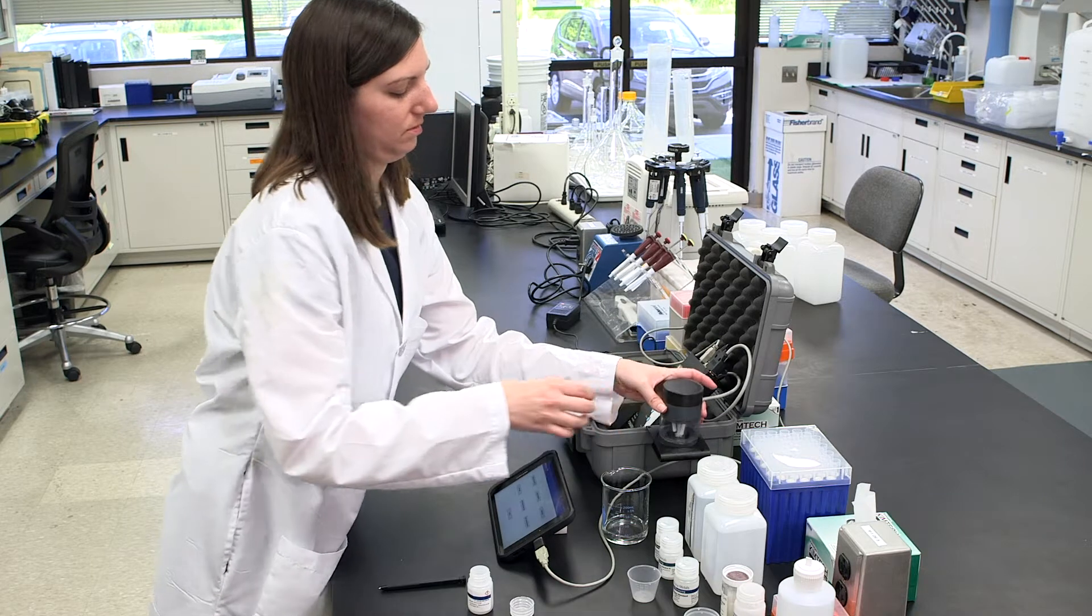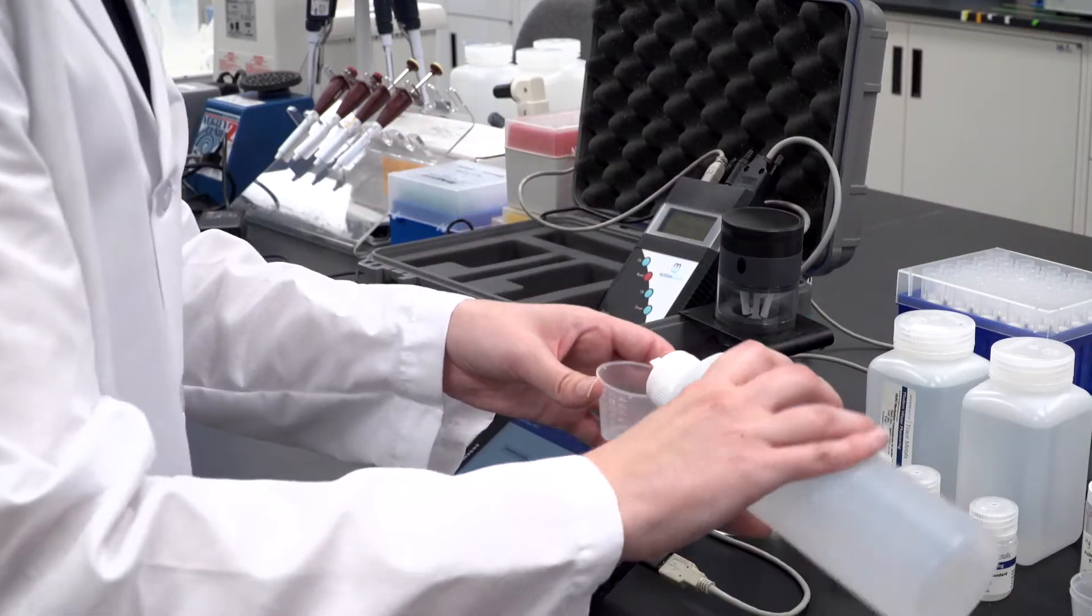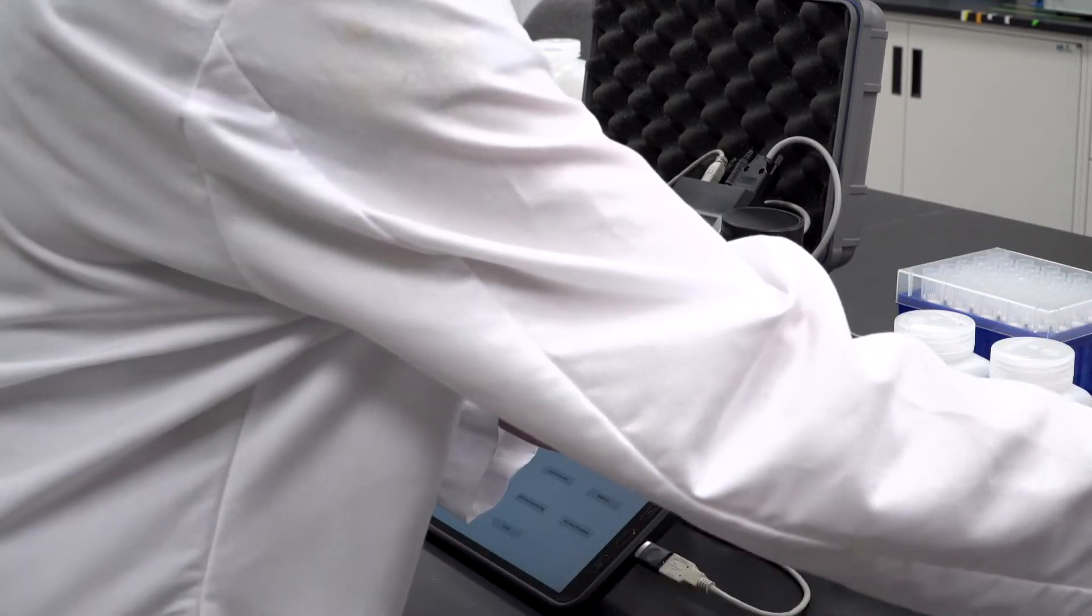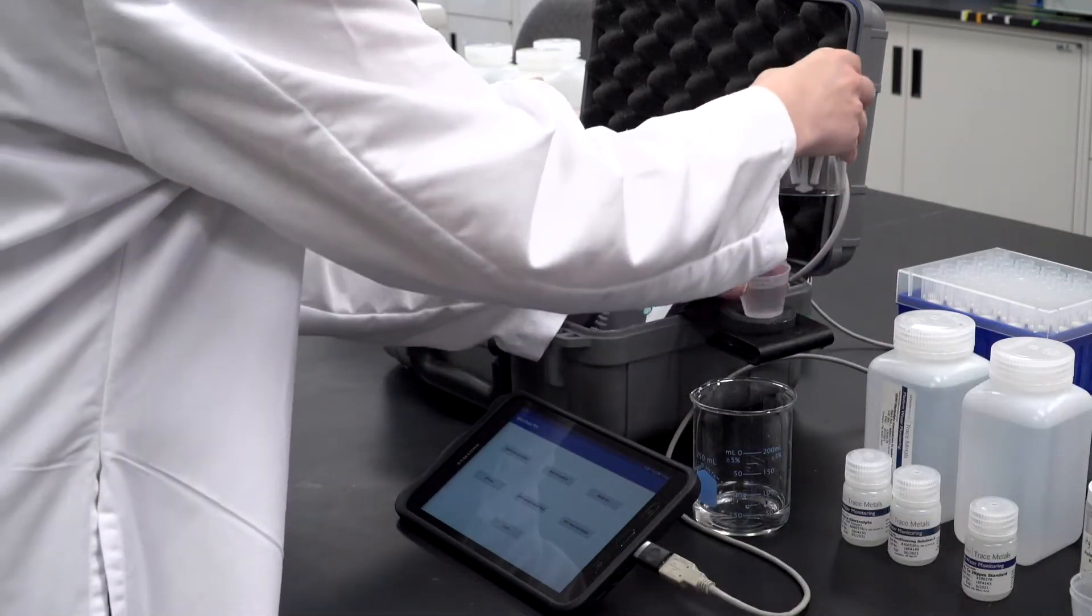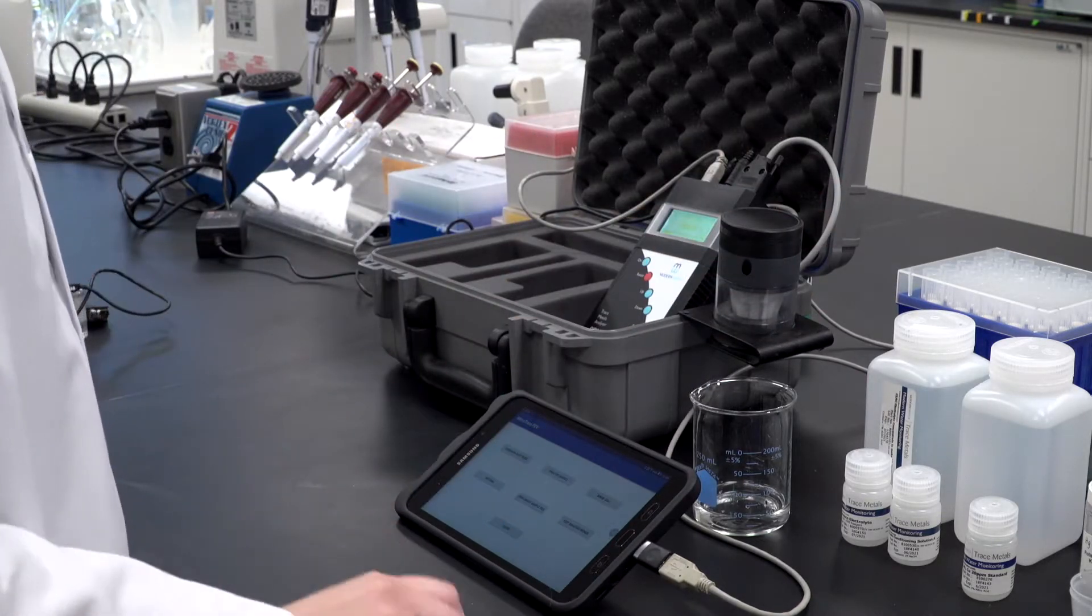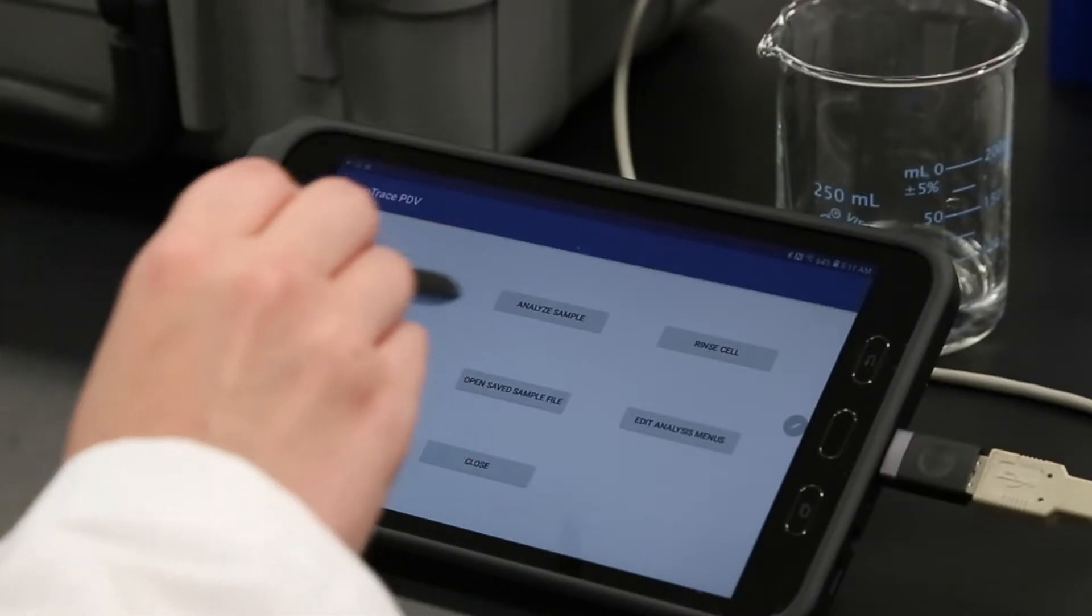At the end of the plating period, pour the plating solution back into the bottle. Rinse the electrodes by filling an analysis cup with 20 milliliters of ultra-pure water. Then run the stirrer using the Rinse Cell button on the main page. Leave the electrodes sitting in the second cup of rinse water. The PDV is now ready to start analyzing solutions.